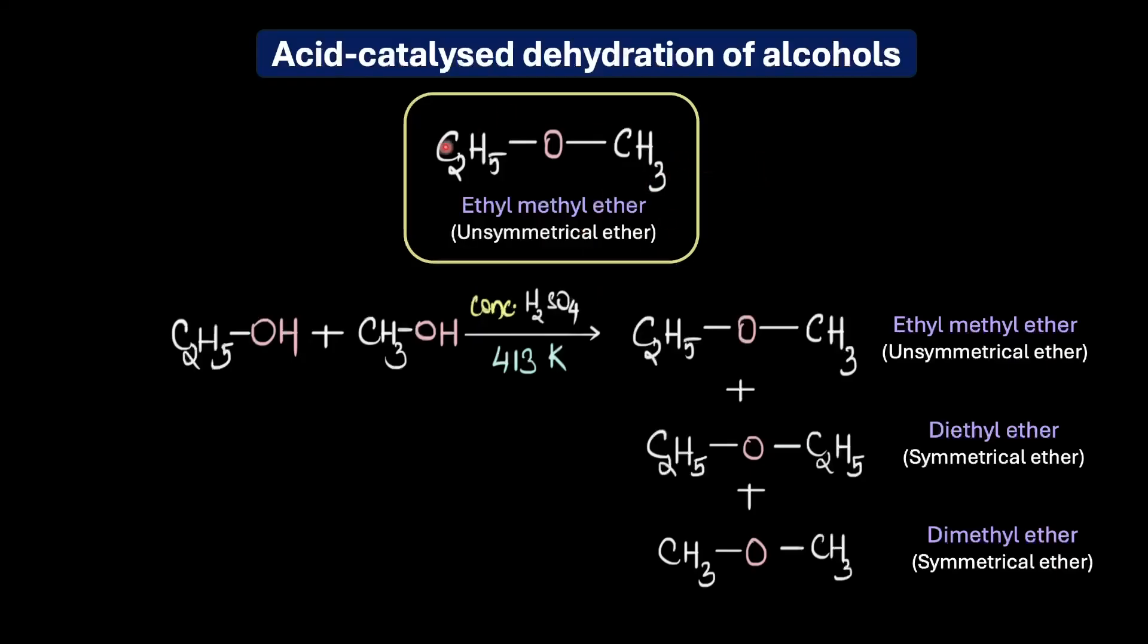So to summarize what did we learn in this video? We saw that acid-catalyzed dehydration of alcohols provides a straightforward one-step method to prepare symmetrical ethers from unhindered primary alcohols. But this reaction demands precise control of temperature. We also need to be careful about other competing reactions like elimination to ensure that our symmetrical ether is formed in good yields.